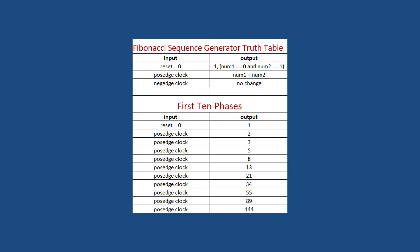And at every posedge clock, we'll have num1 plus num2, but it's changed within the circuit. The output is always going to be the same. And then at negedge clock, no change. And by the same, I mean num1 plus num2, whatever those values are.